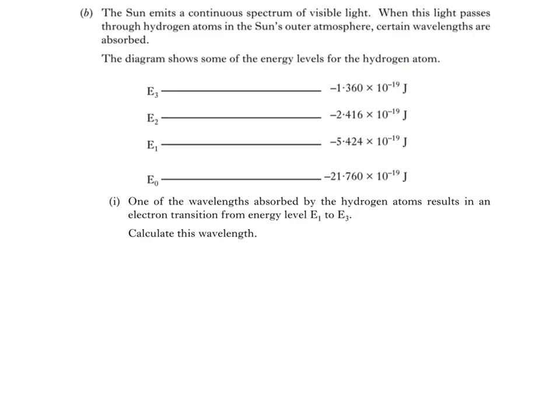So here's the electron, initially in energy level 1. If the electron absorbs a photon, it can make a transition to a higher energy level, in this case energy level 3.